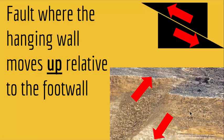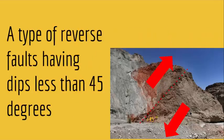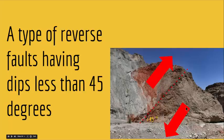The last type of dip-slip fault is called a thrust fault. A thrust fault is a type of reverse fault having dips less than 45 degrees. Thrust faults are essentially reverse faults, but the angle of the fault is less than 45 degrees. The hanging wall goes up while the foot wall goes down, but at this shallower angle.